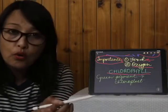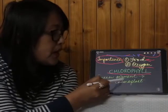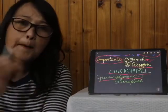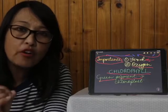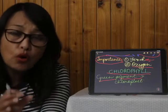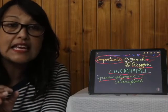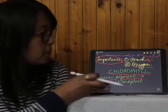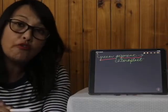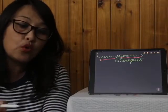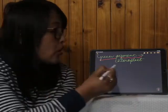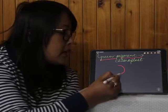Chlorophyll is the green pigment found in microscopic cell organelles. These microscopic cell organelles are found in all plant cells and they are known as chloroplasts.